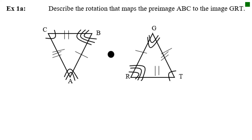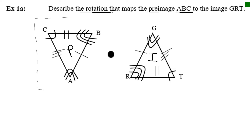Example 1A: Describe the rotation that maps the pre-image ABC to the image GRT. We're told the pre-image is triangle ABC, so the triangle to the right is going to be the image. We've been told it's been rotated, so we just need to figure out specifically what kind of rotation took place. This is where I'd recommend using the patty paper — start by tracing the pre-image.